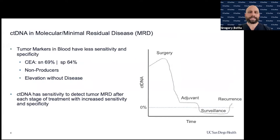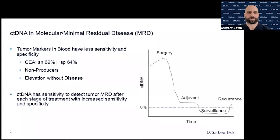The idea is to pick up molecular and minimal residual disease — MRD. We do this to a degree with certain tumor biomarkers such as CEA, but the sensitivity and specificity is very low. Many oncologists have encountered patients who did not produce CEA, making it an uninformative assay, or patients with CEA elevations unrelated to their cancer. We were looking for a more sensitive test, and that's where ctDNA comes into play.